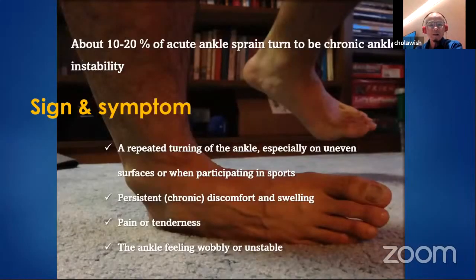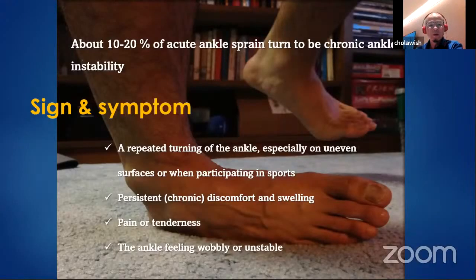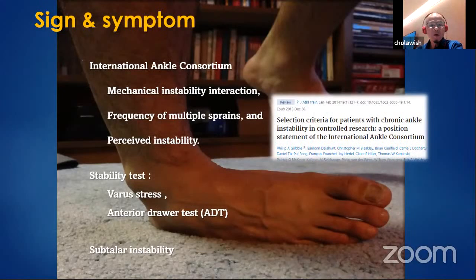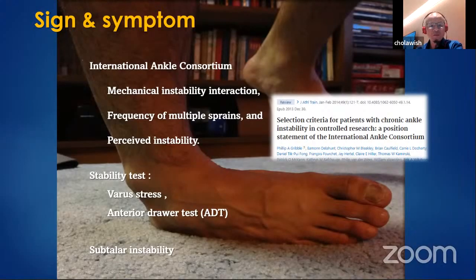We know for sure that acute ankle sprain is a common injury. About 10 to 20% of acute ankle sprains turn into chronic ankle instability. The symptoms include turning of the ankle, especially on an inverted surface or when participating in sports, persistent discomfort and swelling, pain or tenderness, and the ankle feeling wobbly or unstable. From the international ankle concept in 2014, they defined a mechanical instability interaction, frequency of multiple sprains, and perceived instability.